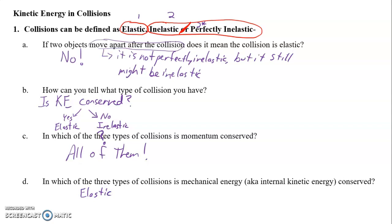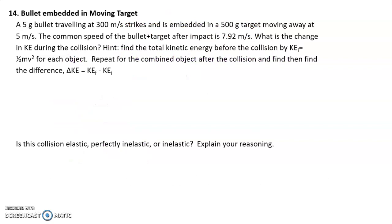Now let's move on and do a problem. We have a 5 gram bullet that is moving along at 300 meters per second. It embeds into a 500 gram target that is moving away at 5 meters per second. The common speed of the bullet and target after impact is 7.92 meters per second. You may remember this problem from a prior video.